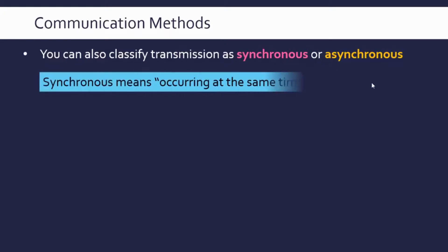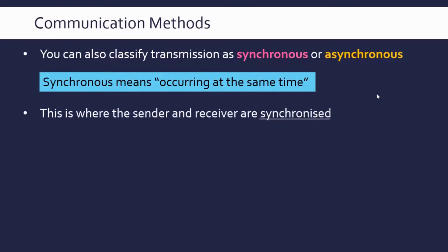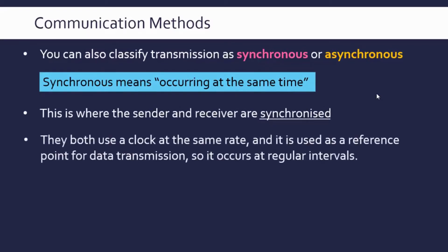Synchronous as a term means occurring at the same time — think of synchronised swimmers or synchronised divers, all their actions occurring at the same time. So for this communication, the sender and receiver are kept synchronised throughout, using a clock at the same rate. This clock signal is used as a reference point for data transmission, meaning transmission occurs at regular intervals.